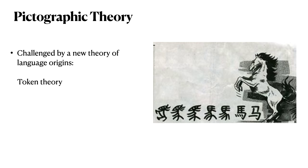The pictographic theory of language origins was unchecked until the mid-20th century, when it was subsequently challenged by a new theory of language origins: token theory.